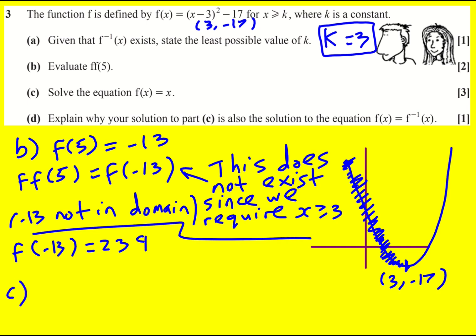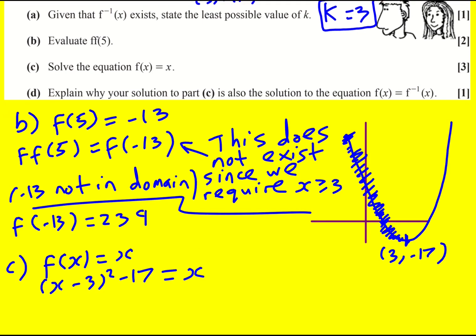Okay, part c: we're asked to solve the equation f of x is equal to x. So I've got my completed square form, I'll write it like that for the moment, and set equal to x. I'm going to expand that out: x squared minus 6x plus 9 minus 17 is equal to x, which means x squared minus 7x minus 8 is equal to 0.